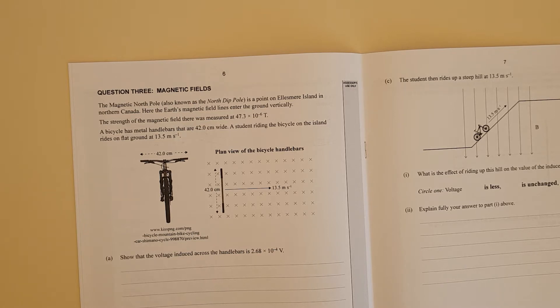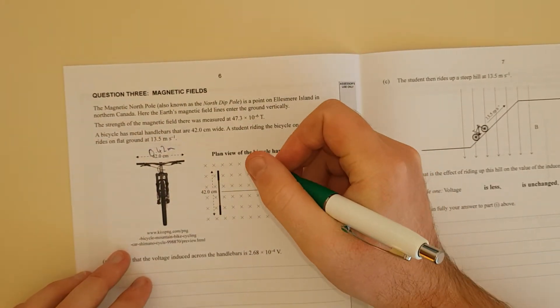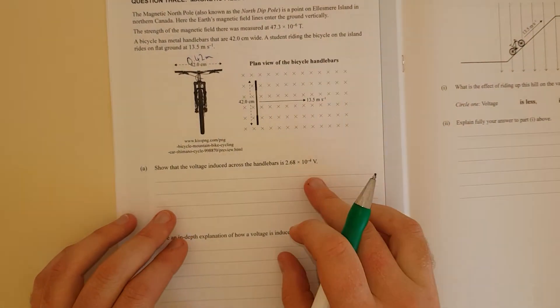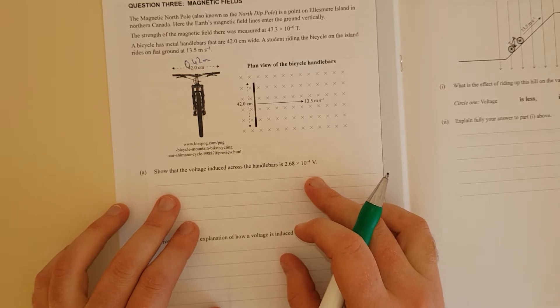Student riding a bicycle on the line going at 37.5 meters per second. This needs to be 0.42 meters because we always need to change things into SI units. Show that the voltage induced across the handlebars is 2.68 times 10 to the negative 4 volts.